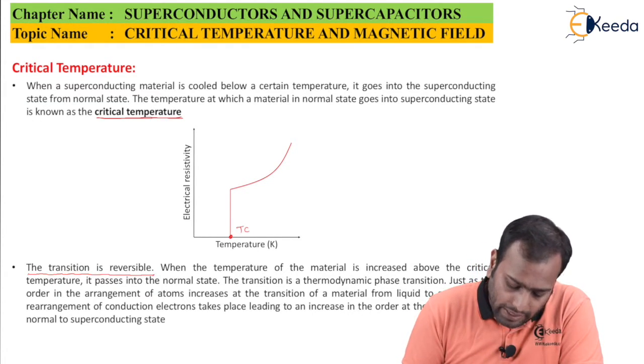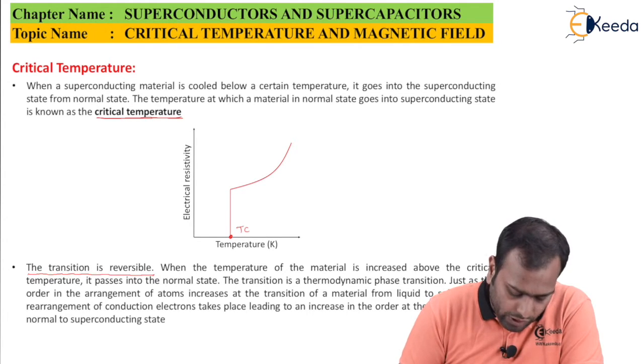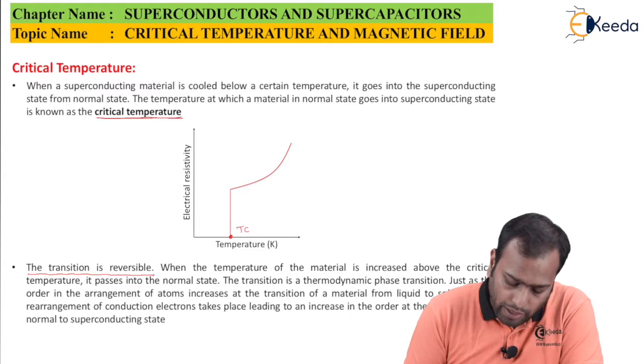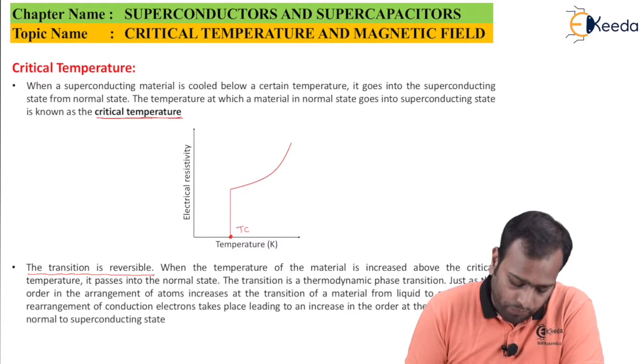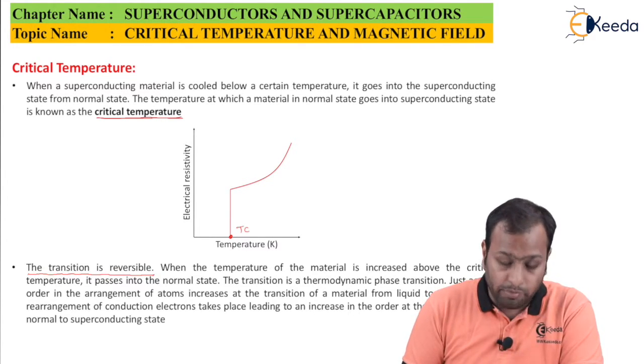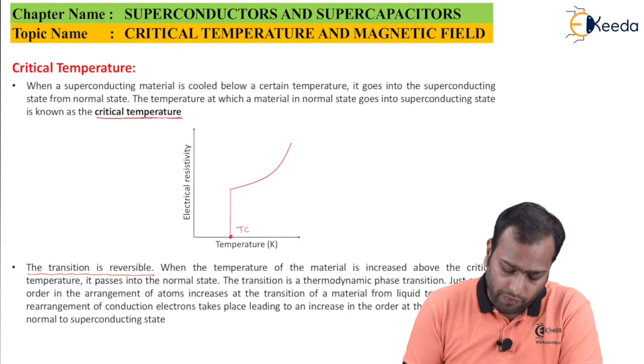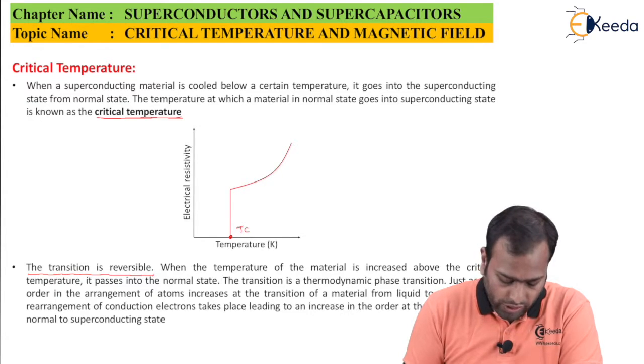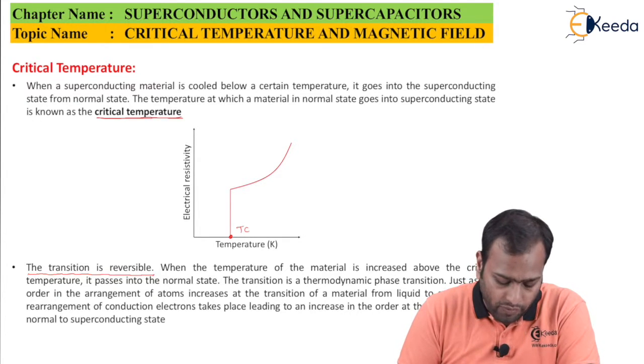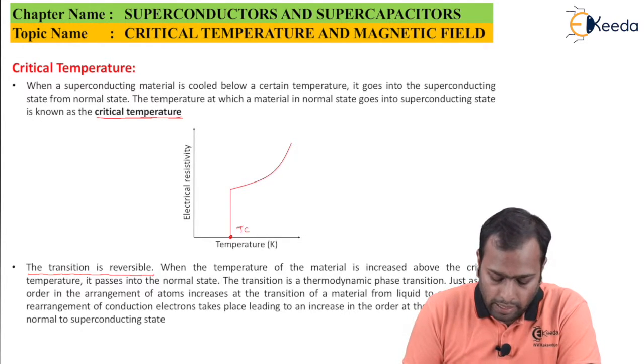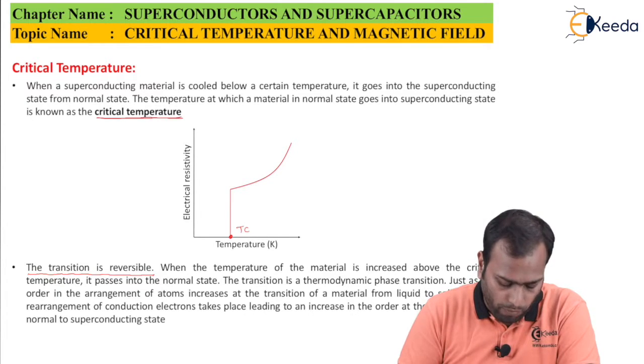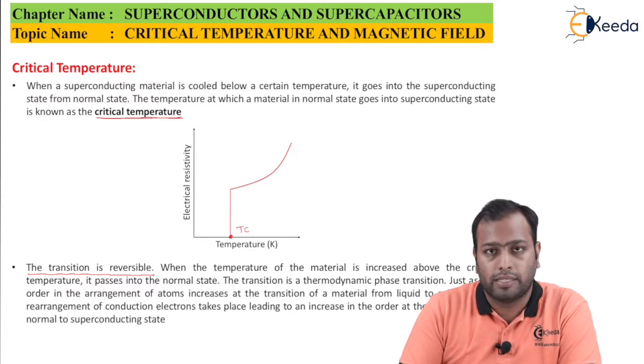When the temperature of the material is increased above the critical temperature, it passes into the normal state. The transition is a thermodynamic phase transition. Just as the order of the arrangement of the atom increases at the transition of the material from liquid to a solid state, a rearrangement of the conduction electrons takes place, leading to an increase in the order at the transition from normal to superconducting state.